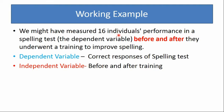Working example: we measured 16 individuals' performance in a spelling test. The dependent variable is the spelling test score. Before and after they underwent training to improve spelling, the students were sent for training and their correct responses were noted down before training and after training. The dependent variable is correct responses of the spelling test and the independent variable is before and after training.